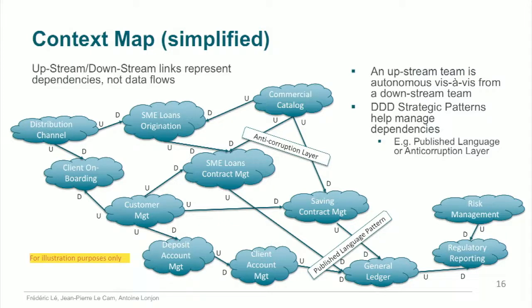Instead of looking at architecture as layered — business, information system, technology — you take the business domain and start modernizing the system based on business domains. This is the strategic pattern of domain-driven design, covered in the OAAF snapshot. The idea is to directly implement your business concepts in your software systems, creating a much more direct connection between business and software.